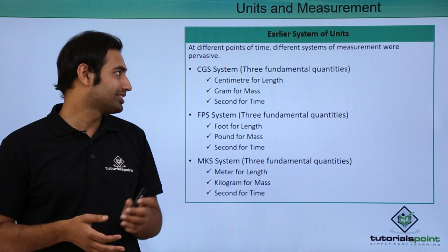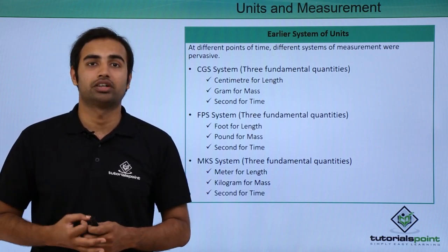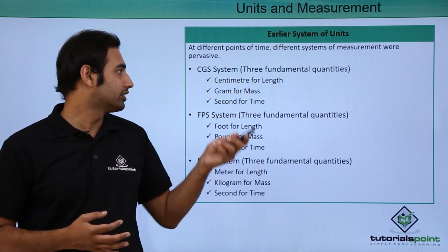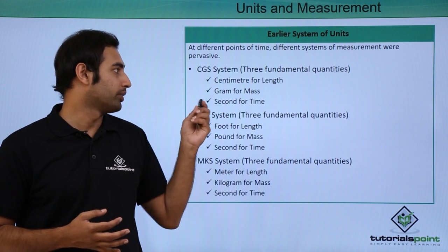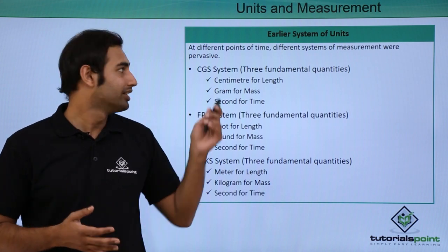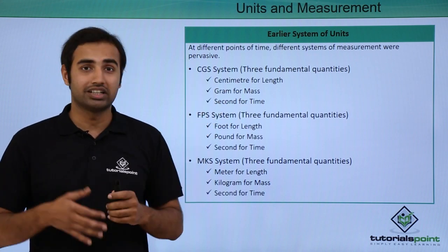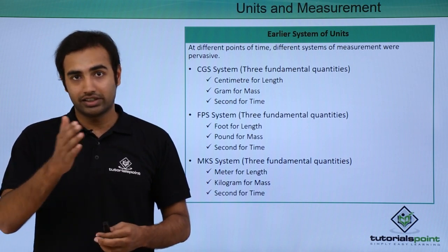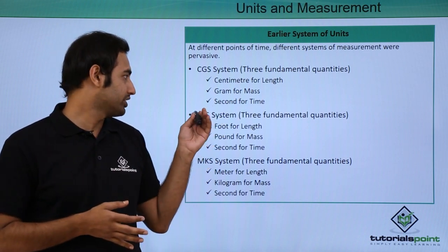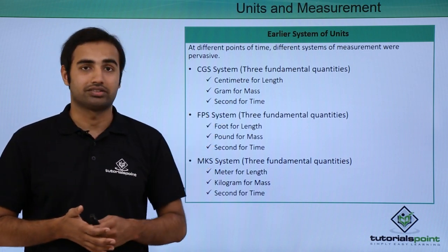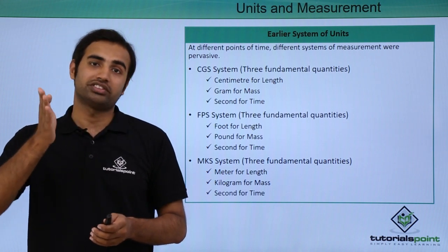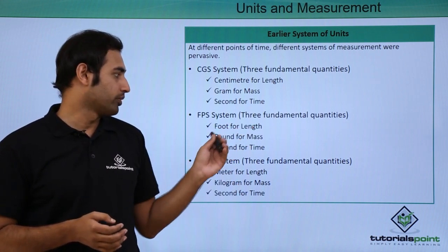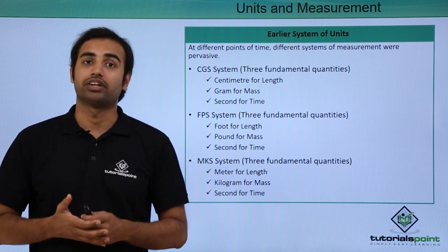One of them was the CGS system which had three fundamental quantities: centimeter for length, gram for mass, and second for time — that's where the abbreviation CGS came from. The next system was the FPS system, also called the foot-pound-second system, with foot for length, pound for mass, and second for time.